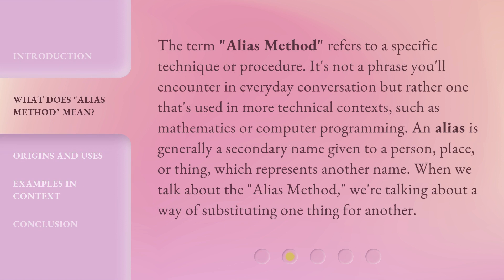The term alias method refers to a specific technique or procedure. It's not a phrase you'll encounter in everyday conversation, but rather one that's used in more technical contexts, such as mathematics or computer programming. An alias is generally a secondary name given to a person, place, or thing, which represents another name. When we talk about the alias method, we're talking about a way of substituting one thing for another.